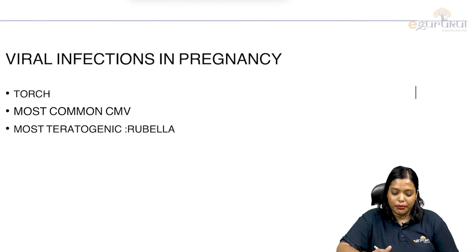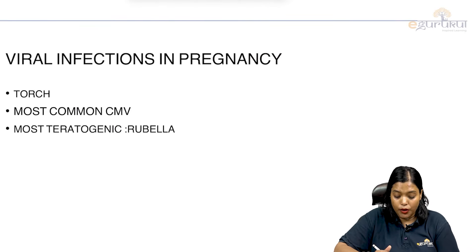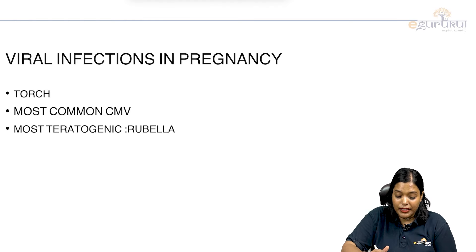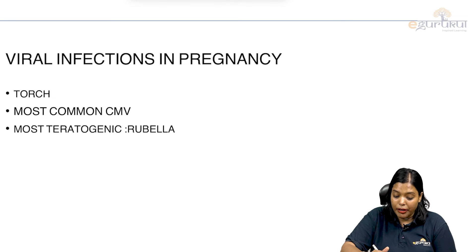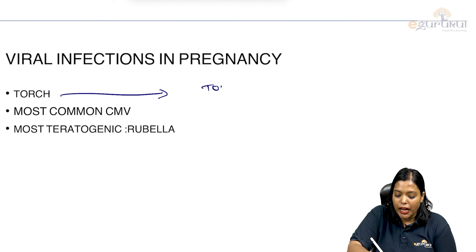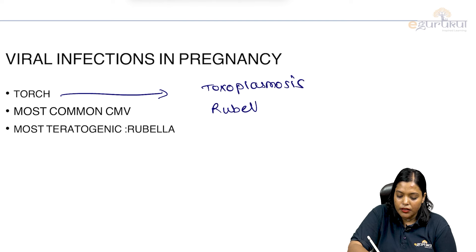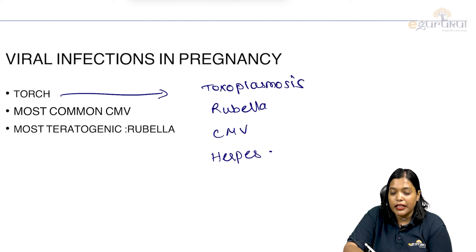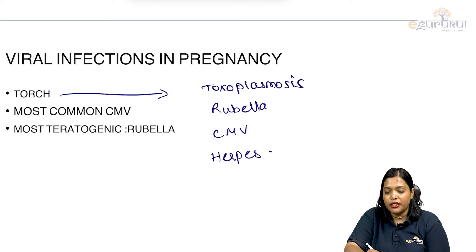Now coming to viral infections in pregnancy — we have TORCH infections. TORCH stands for Toxoplasmosis, Rubella, Cytomegalovirus, and Herpes. The most common viral infection in pregnancy is cytomegalovirus, whereas the most teratogenic is rubella.